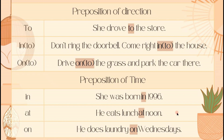We have another example using 'in' or 'into': 'don't ring the bell, come right into the house,' or 'come right in the house.' For 'onto,' 'on to,' or 'on': 'drive onto the grass and park the car there,' or 'drive on the grass and park the car there.' Some English speakers face confusion using 'in' and 'on.' We use 'in' when something is enclosed by something else, while 'on' is used when an object is placed above or outside something else.